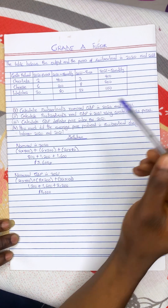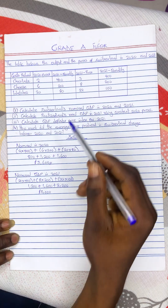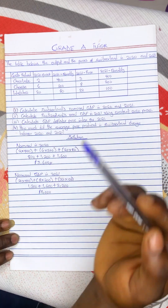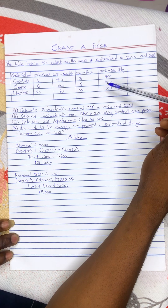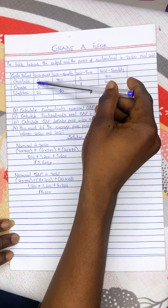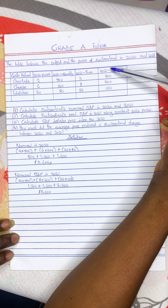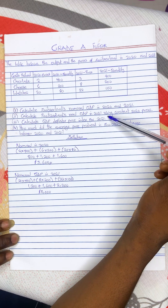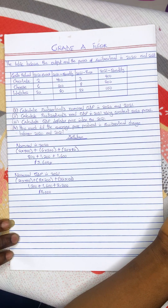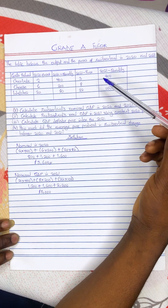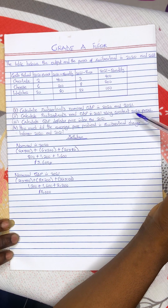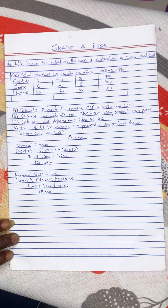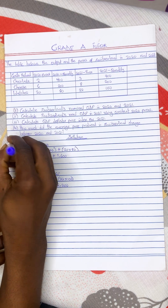The second part asks us to calculate real GDP in 2021 using constant 2020 prices. When calculating real GDP, you use the current year's quantity and multiply it by the base year's prices. So here we use the 2021 quantities multiplied by the 2020 prices. If the base year is not stated, you use the first year's prices. Since the question specifies 2020, we use those prices multiplied by 2021 quantities.